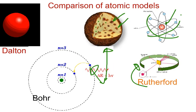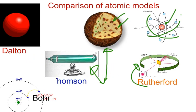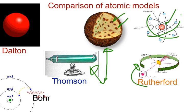So, these are a couple of the models that we looked at. We had Dalton, we had J.J. Thomson's model, we had Rutherford's model, and then we had Bohr's model. These are the four models that we need to know for our upcoming quiz. You should be able to do comparisons and contrasts between these models — you should know the changes, the experiments, what led to what, and what was proposed from them.